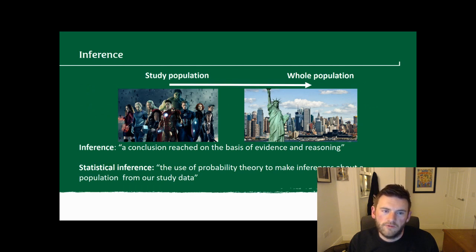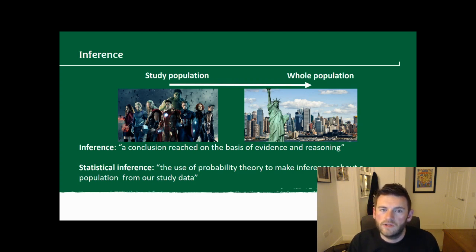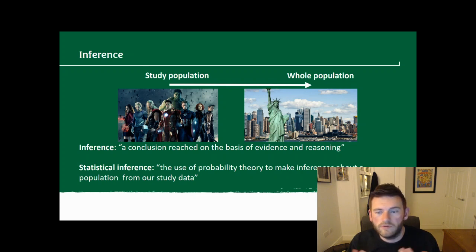One way of describing this is if we had the Avengers as our study population and found results — we applied really nice statistical models and had a great study design. But then we say those results are representative of the whole population of New York City, where the Avengers are based, or representative of the human population, which isn't really going to be accurate. That's where inference and our ability as students, practitioners, and academics to understand the statistics we run comes in, combined with our real-world knowledge and expertise.